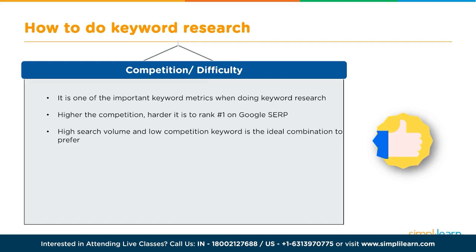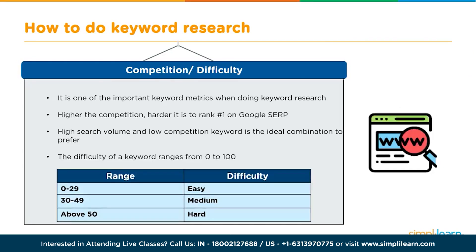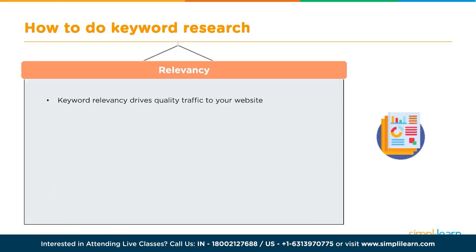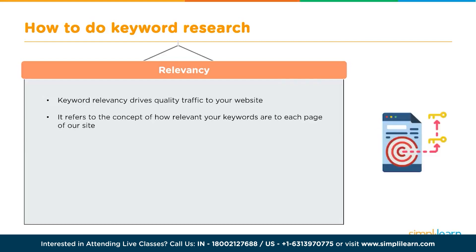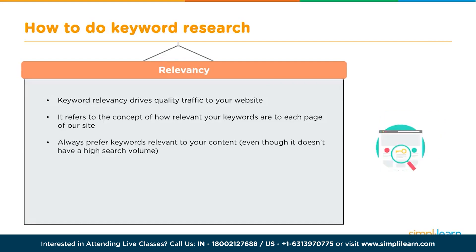If you choose a keyword that's not relevant to your content, it's not going to bode well for user engagement. Keyword difficulty ranges from zero to a hundred in Google's keyword tool, but also get the numerical factor using the allintitle syntax. Relevancy is what drives traffic to your website, keeps it there, and gets that traffic to engage and convert. Always choose keywords that are relevant to your content, even if it means sacrificing volume — relevancy trumps volume and competition.